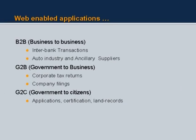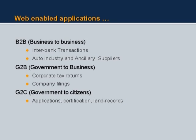Web-enabled applications take different forms and are characterized by acronyms. B2B means business to business — interbank transactions or transactions between an ancillary supplier and an automobile industry. G2B is government to business — corporate tax returns, company filings. G2C (government to citizen) and B2C (business to citizen) are more widely used. For example, getting an insurance policy on the web is a B2C application.